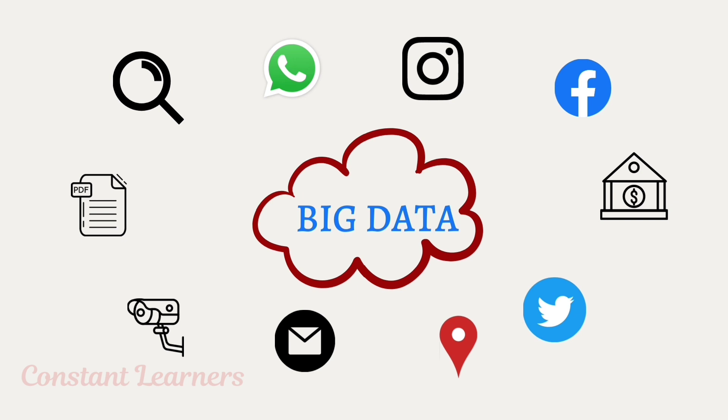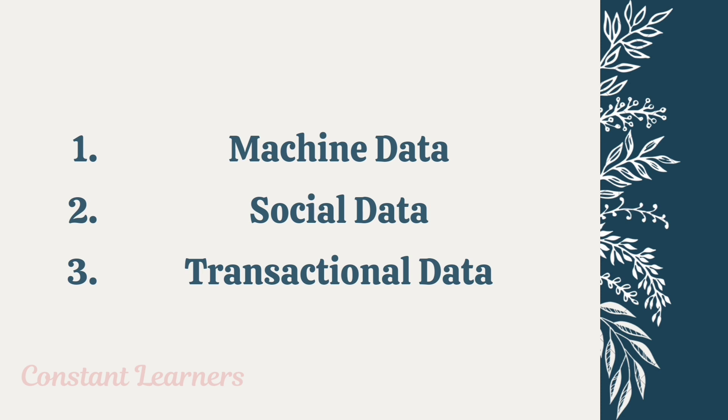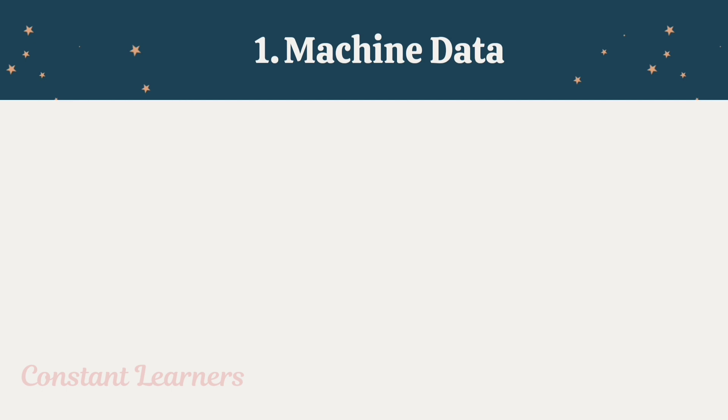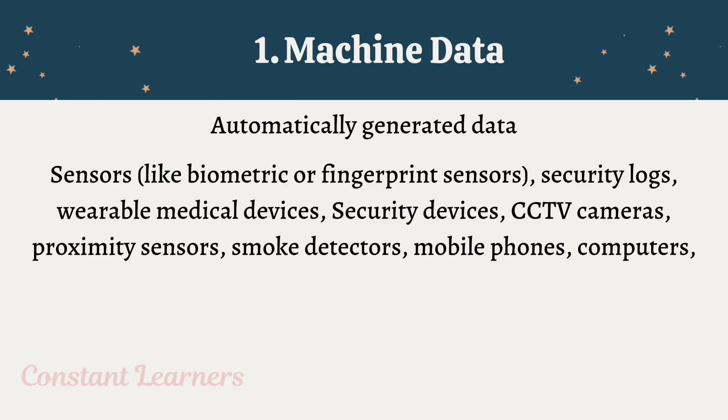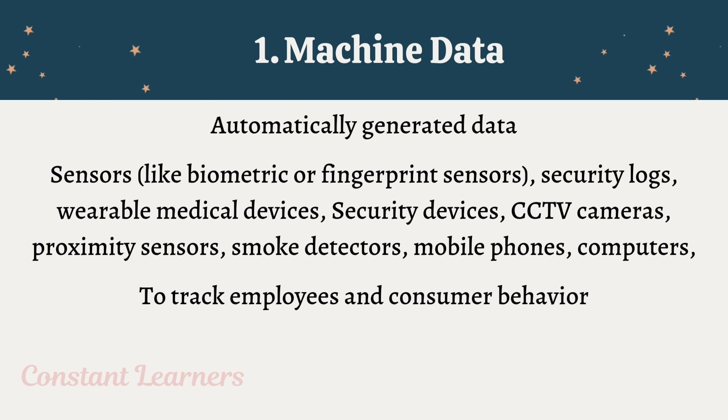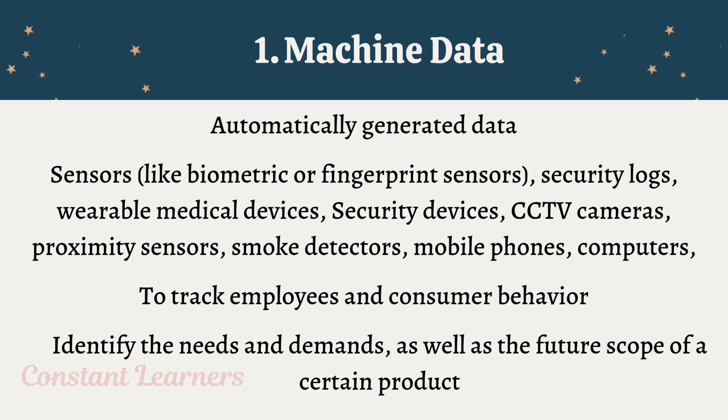Let's look at the three main sources from which we get big data. First is machine data, then social data, and transactional data. Machine data is automatically generated data from multiple sources like sensors — biometric or fingerprint sensors — security logs, wearable medical devices, security devices like CCTV cameras, proximity sensors, smoke detectors, mobile phones, computers, and more. All these devices help organizations track employees as well as consumer behavior, identifying needs, demands, and future scope of products while focusing on increasing efficiency.